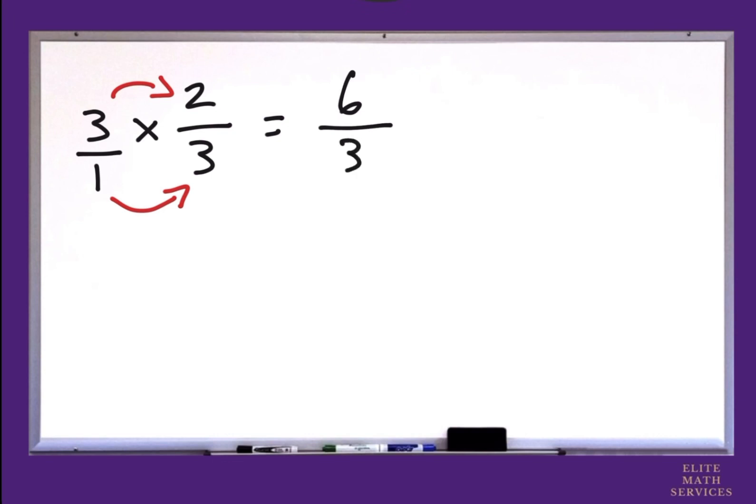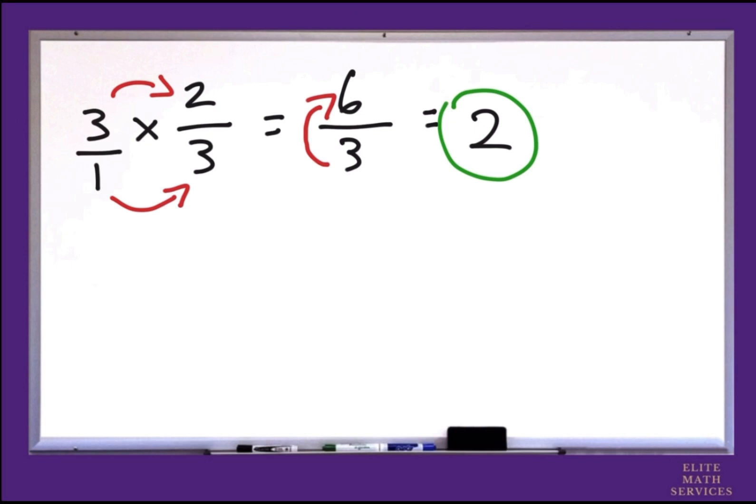Here we are left with an improper fraction, so we must simplify it. However this improper fraction, 3 goes into 6 an even number of 2 times. So 2 with nothing left over, so we don't have a remainder and we don't have a fraction. 2 is our final answer.